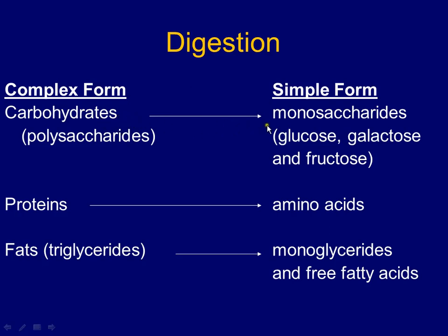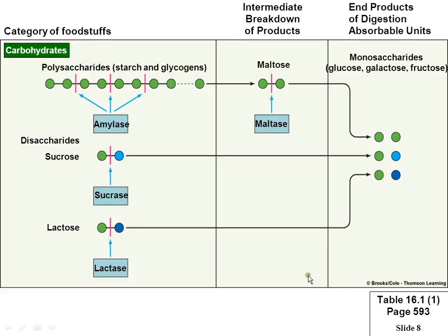Carbohydrates are broken down from polysaccharides — many sugars — into monosaccharides, one sugar. Glycogen, cellulose, and starch are polysaccharides. You break them into monosaccharides like glucose, galactose, or fructose. Proteins must be broken into amino acids. Fats start as triglycerides and are broken down to monoglycerides and free fatty acids. You need to break these long chains into simple components — monocomponents — to absorb them.